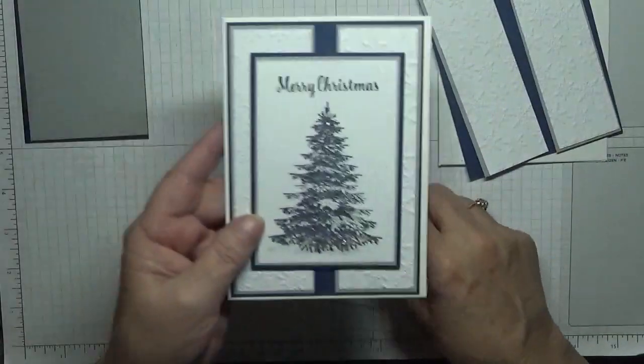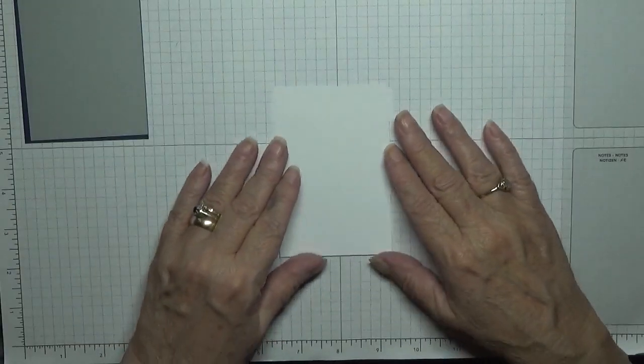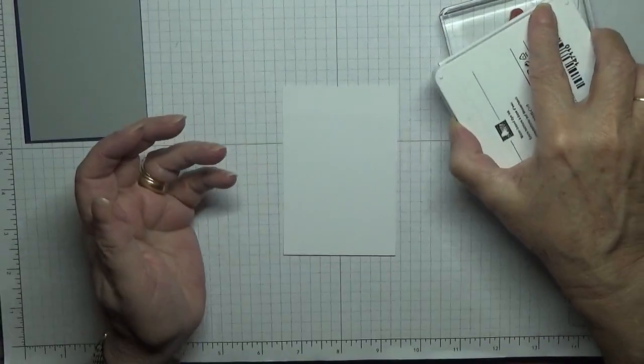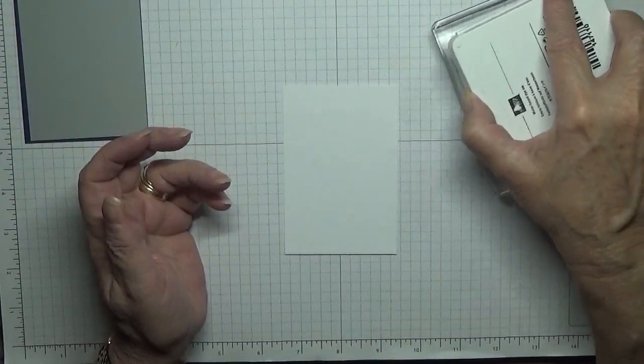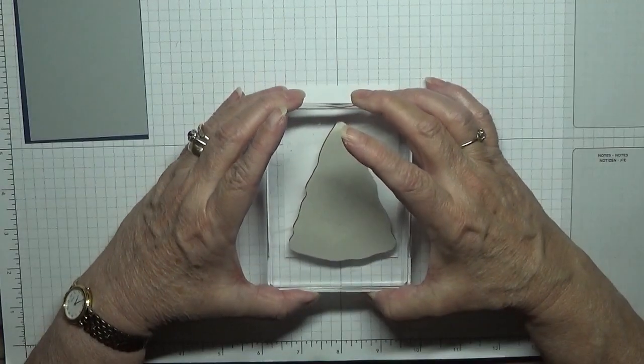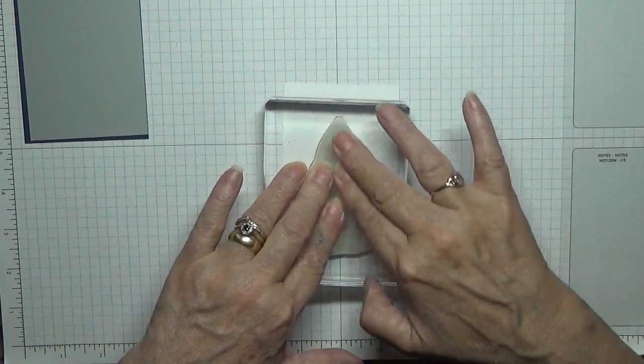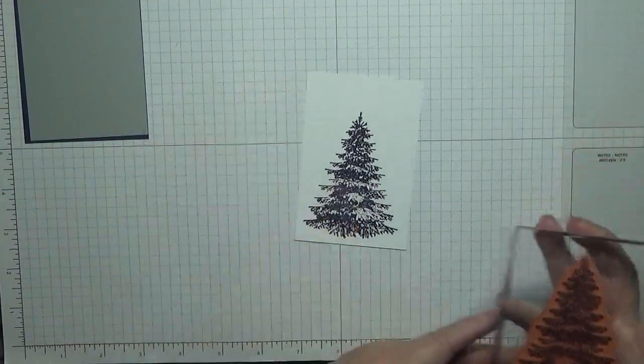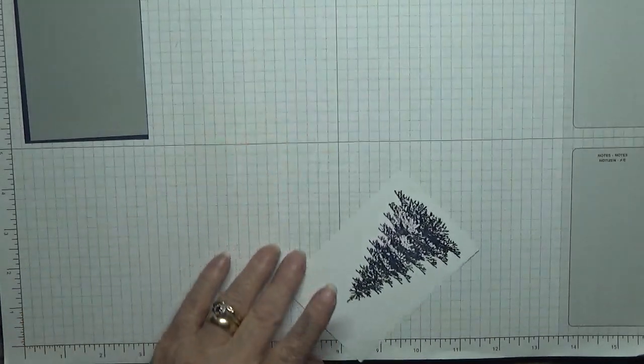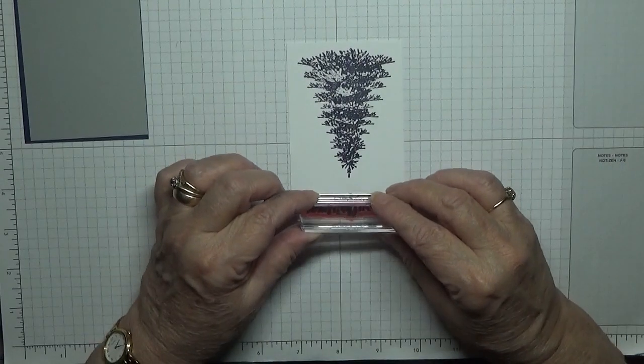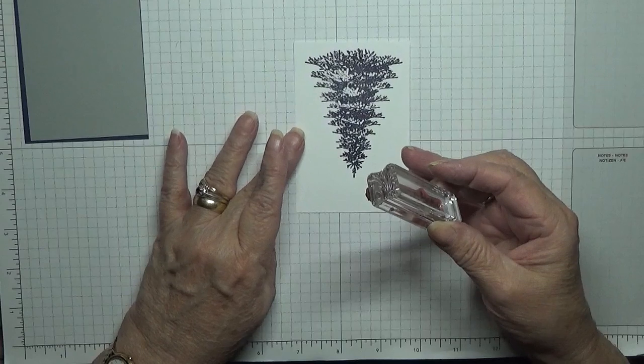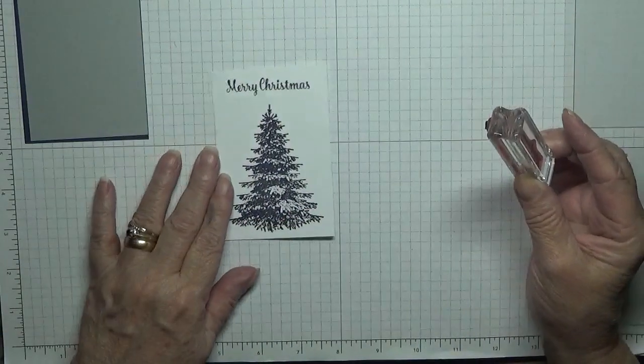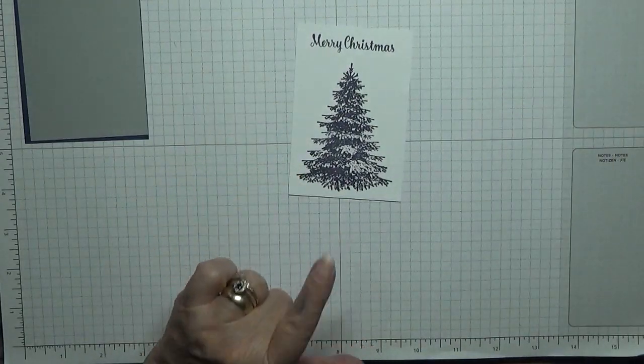At first we need to do our stamping and I'm only stamping in night navy. We're going to stamp a tree, so I've got my tree, I've got my night navy and ink up the tree. We're going to stamp that low down the piece of card because we've got to get our Merry Christmas at the top. And then with our Merry Christmas I'm going to turn it around and stamp Merry Christmas. Make sure that's straight on the top. Now that, believe it or not, is our stamping done.